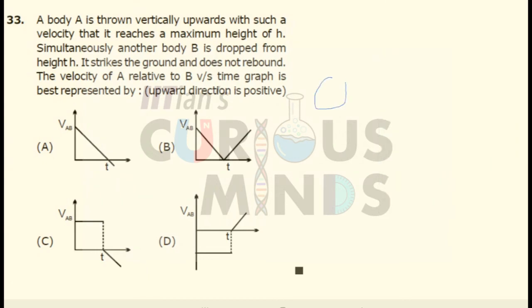A body A is thrown vertically upwards such that it reaches a maximum height h. Body B at the same time is left from the same height h such that it reaches the ground and does not rebound. Body B does not rebound.